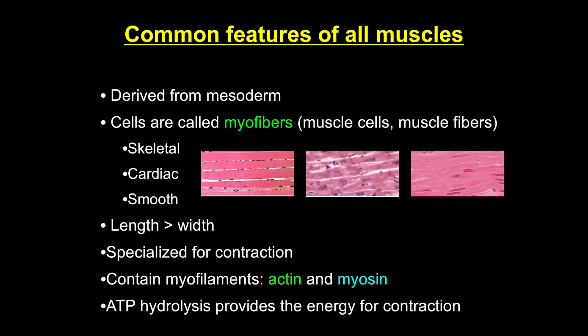These subtypes all share some general characteristics. They're all longer than they are wide, they all contain myofilaments composed of actin, myosin, and accessory proteins, they all contract, and each uses ATP hydrolysis to drive that contraction. The mechanisms and control of contraction differ among the three types, but we'll cover that in our second muscle tutorial.